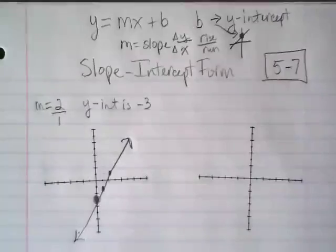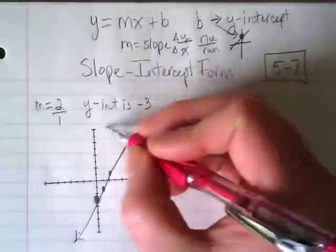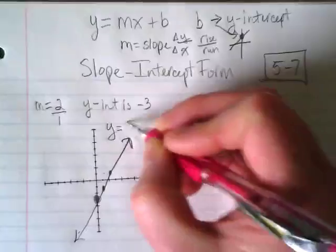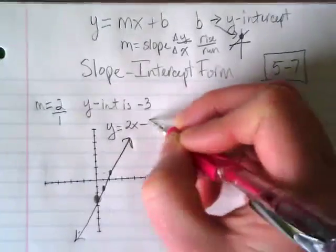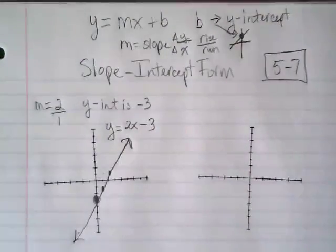With that, we can write the equation for that line. This would be y is equal to 2x minus 3. I'm taking the pieces of the equation and putting them in place.